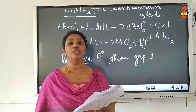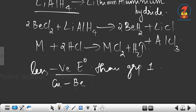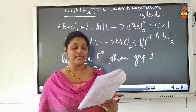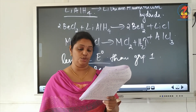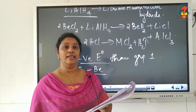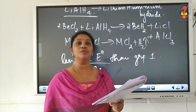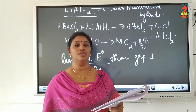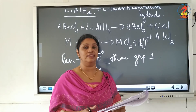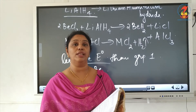The uses of group 2 elements: copper-beryllium alloys are used to prepare high-strength springs. Metallic beryllium is used to make windows of X-ray tubes. Magnesium-aluminium alloys, being light in mass, are used in aircraft construction. Milk of magnesia (suspension of magnesium hydroxide in water) is used as an antacid. Calcium is used in the extraction of metals from oxides, and radium salts are used in radiotherapy for the treatment of cancer.